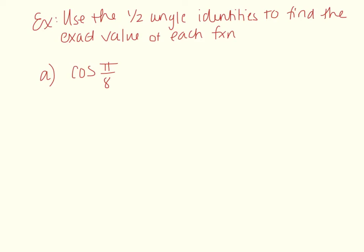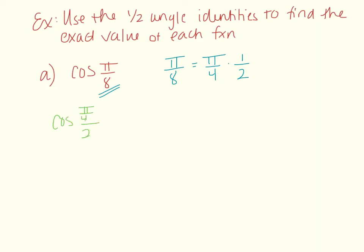Here's an example using half angle identities: find the exact value of cosine of pi eighths. We want to write pi eighths as a half angle. Pi eighths equals pi fourths times one half, so cosine of pi eighths equals cosine of (pi fourths over two). Pi eighths is not one of our standard angles, but pi fourths is, so dividing it by two gives us pi eighths, and we can apply the half angle formula.